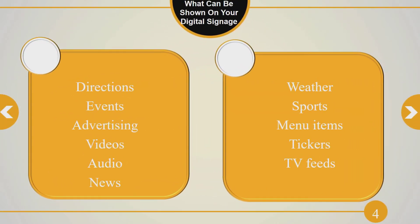What can you show on your digital signage? Almost anything you can show on a computer monitor. You can show directional signage — for example, in a large hospital directing people to emergency, admitting, or the x-ray laboratory. In a conference center, you can show upcoming events, times, rooms, and speakers. In shopping malls, you can show advertising for different merchants. You can also show videos, play audio, and show news, weather, and sports.